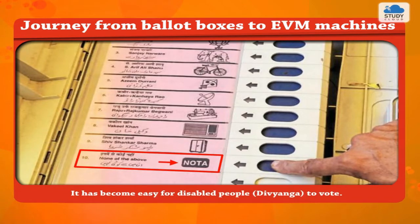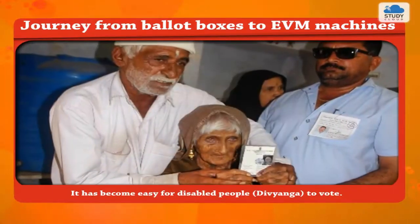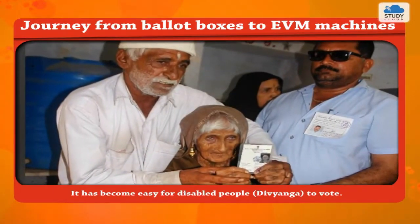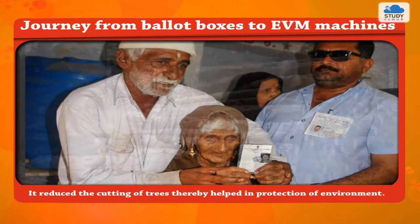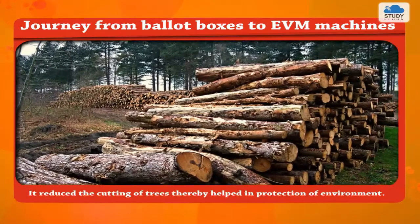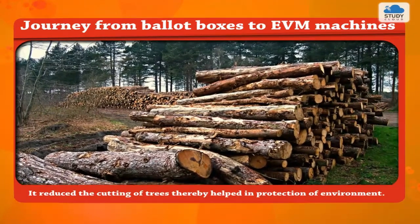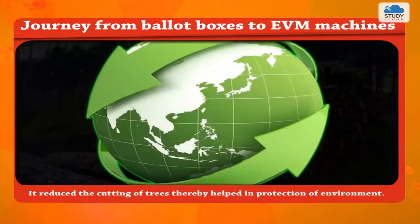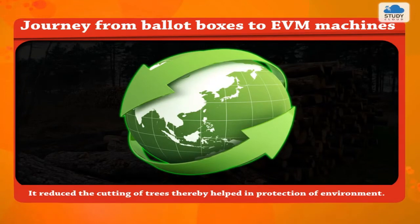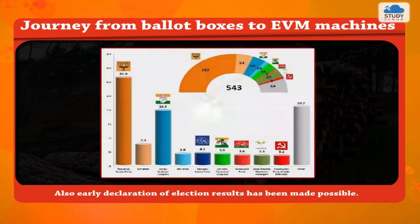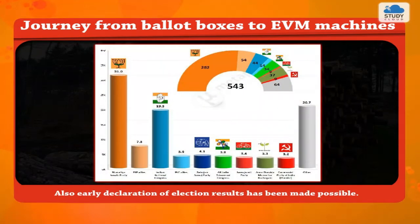It has become easy for disabled people, Divyanga, to vote. It reduced the cutting of trees, thereby helped in protection of the environment. Also, early declaration of election results has been made possible.